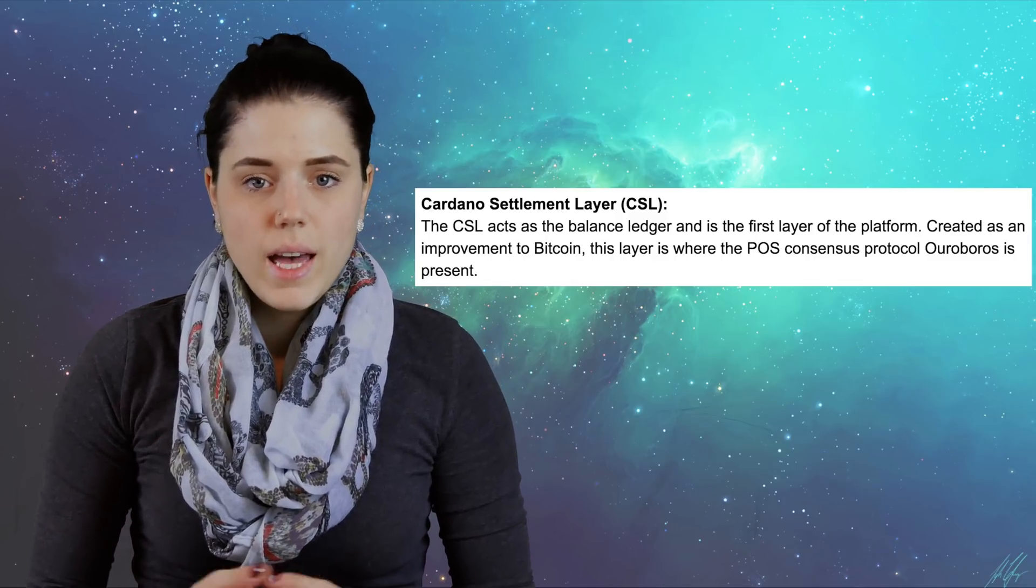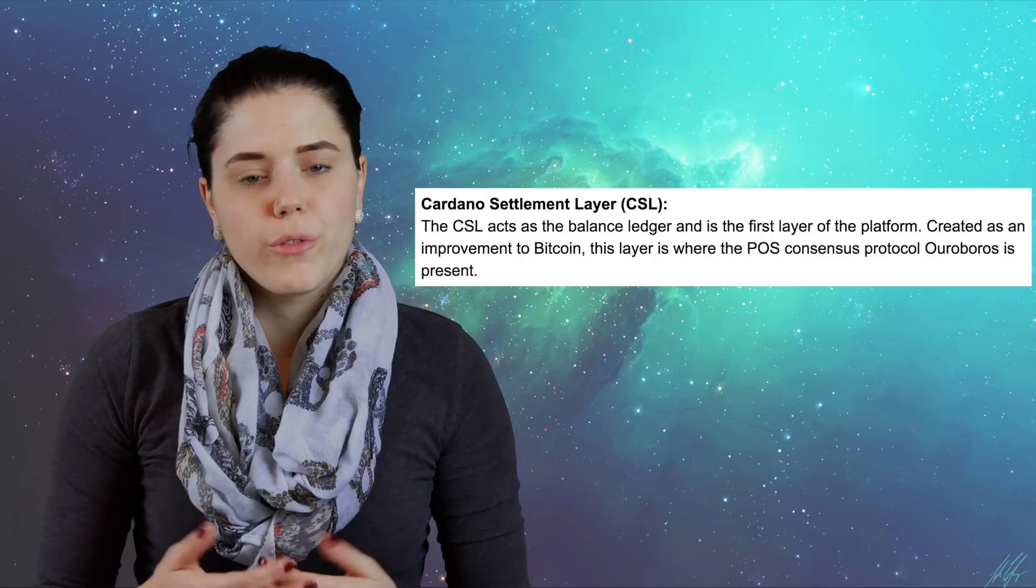Cardano is being designed in two layers. One is the ledger of account values, and the other is the reason why the account values have moved to someone else's account. This enables the smart contracts that were written on the platform to be more customizable and flexible. The first layer is the Cardano settlement layer, or the CSL, and it acts as the account ledger, but also the first layer of the platform. Created as an improvement to Bitcoin, this is where the DPoS consensus protocol, or Ouroboros, is located.